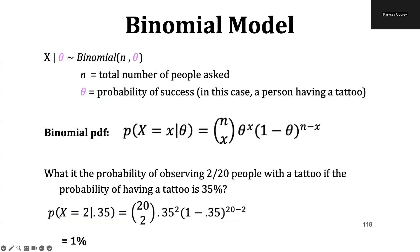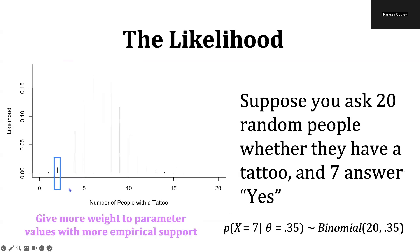Similarly, perhaps we observe two people with a tattoo, and if theta is still 35% or 0.35, then our probability would be 1%. So here, this is equal to about 1%.